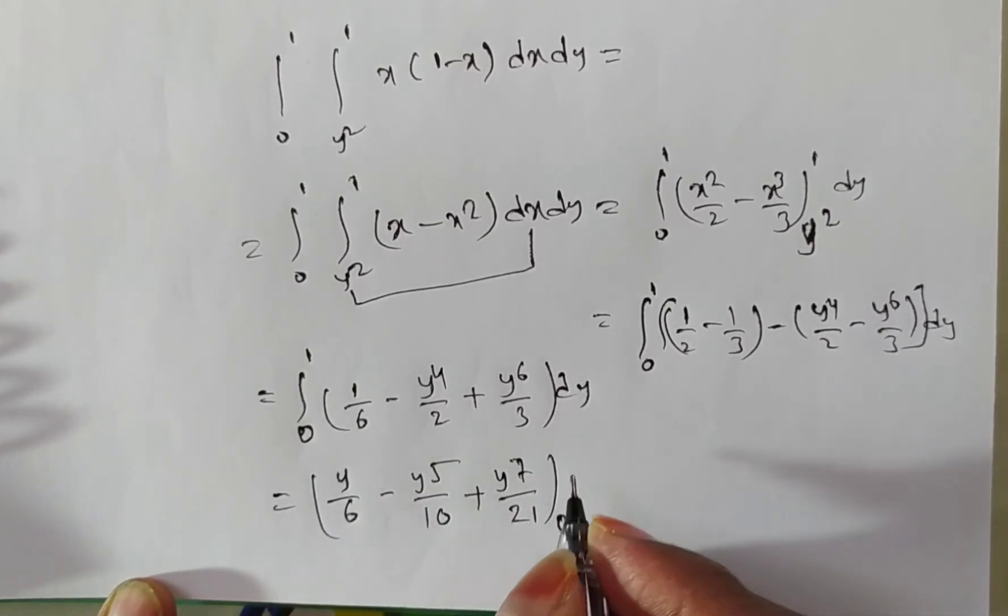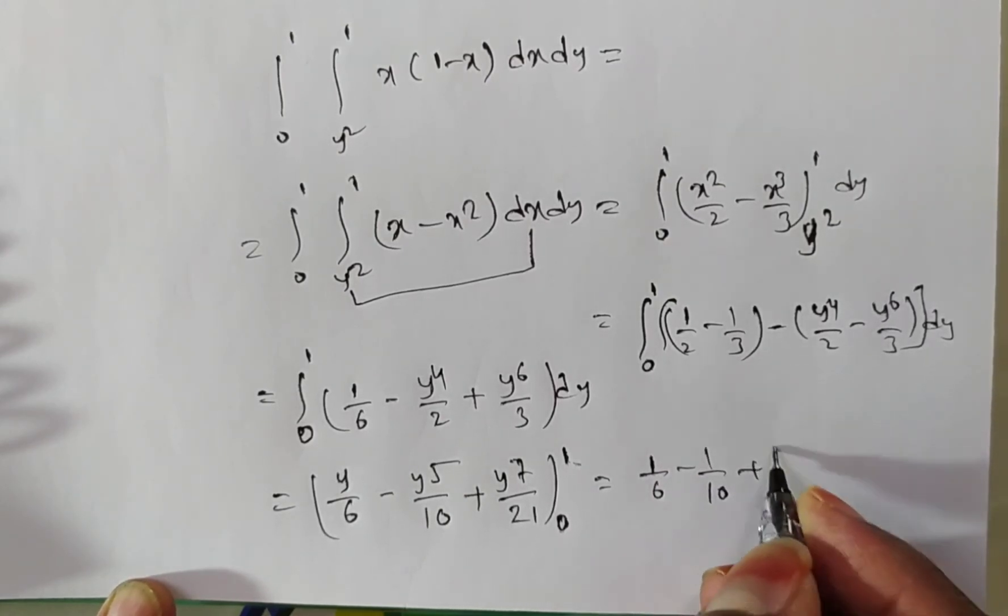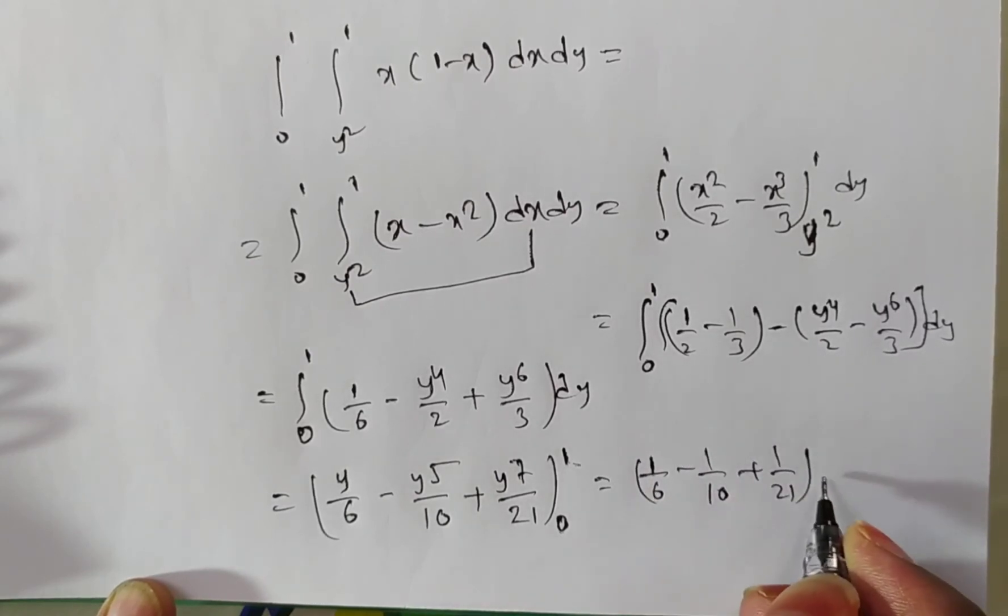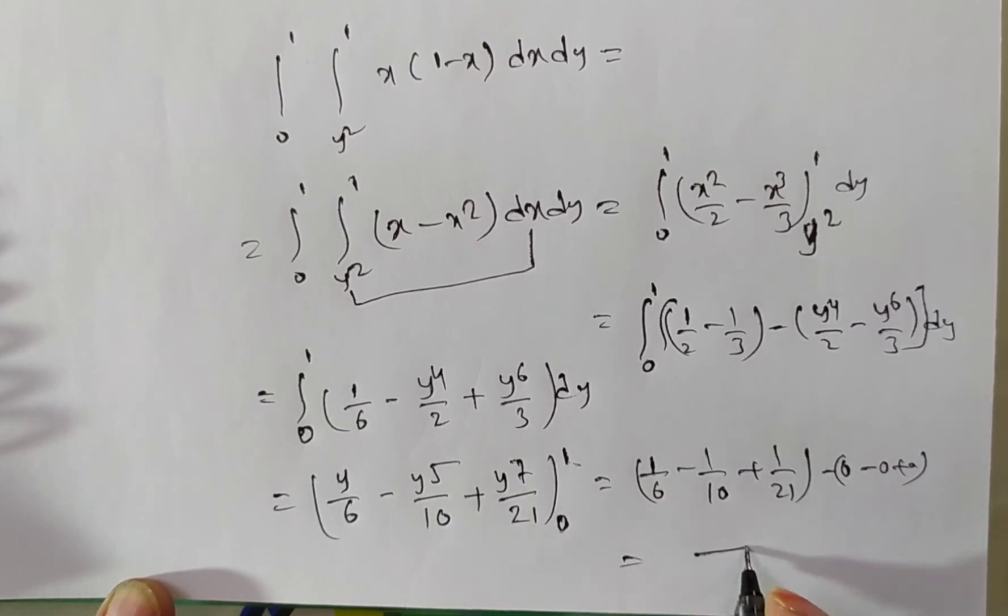Now, the lower limit of y is 0, upper limit of y is 1, and this is equal to, so upper limit if you are substituted, then 1 by 6 minus 1 by 10 plus 1 by 21, minus lower limit is 0, minus 0 plus 0, so if you simplify it,